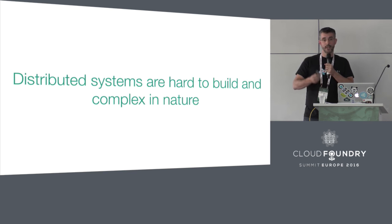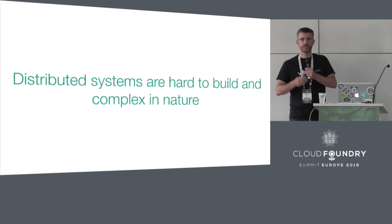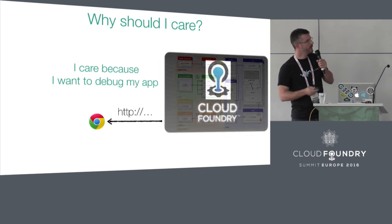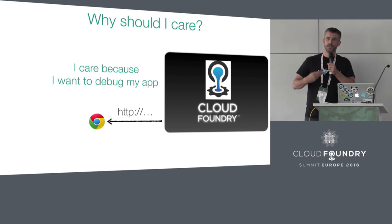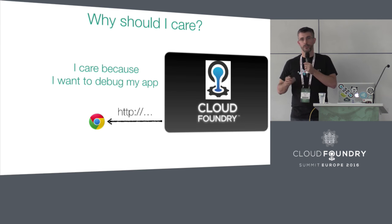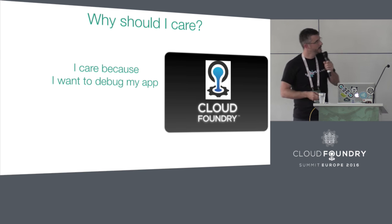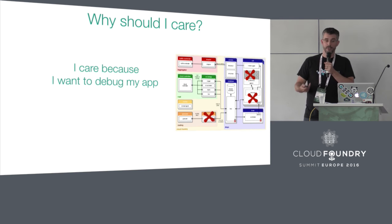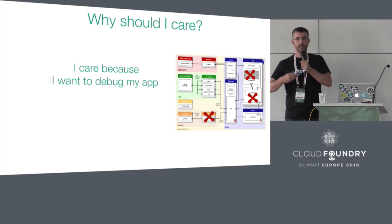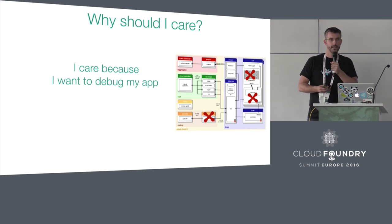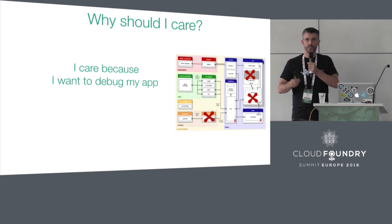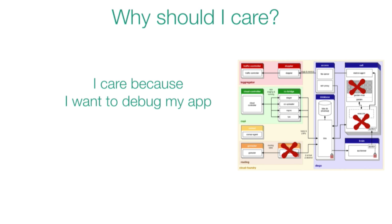Because distributed systems like Diego are complex, there's a lot of value in really understanding them. For the Cloud Foundry operator, there are at least two reasons to be concerned about the internals. The first reason is you need to debug your app. If a user is accessing an endpoint and that route goes away, there could be any number of failures causing it. Your container could have died, your app may have crashed, the rep on the cell may have died making the cell look offline, or the route emitter may have died causing the dynamic routing table not to get updated.